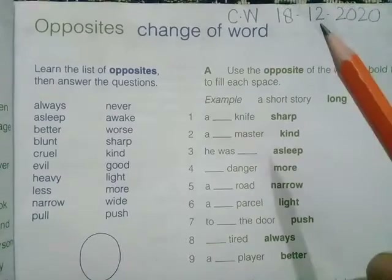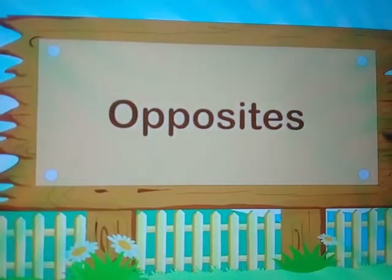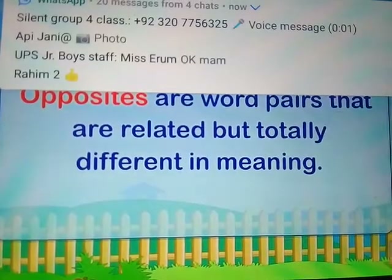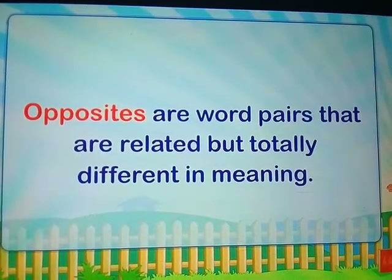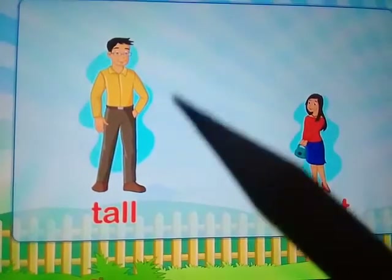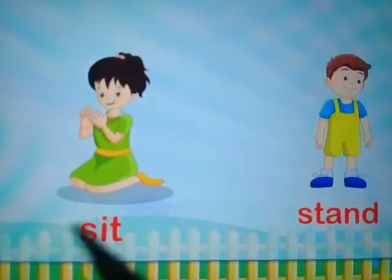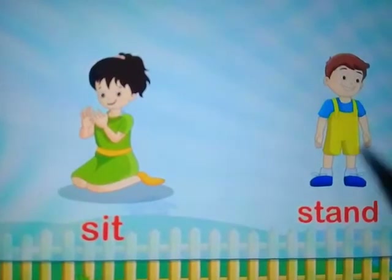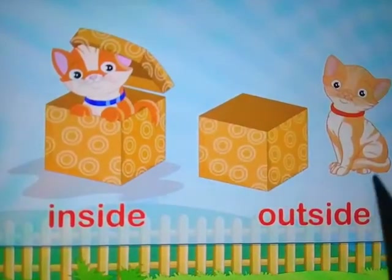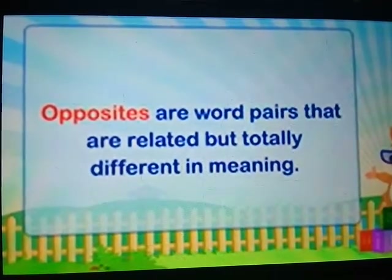Write CW and the short date at the top of your page, which is 18/12/2020. Our topic is opposites. Dear students, opposites are word pairs that are related but totally different in meaning. For example, tall — the opposite of tall is short. Sit — the opposite of sit is stand. Inside — the opposite of inside is outside.